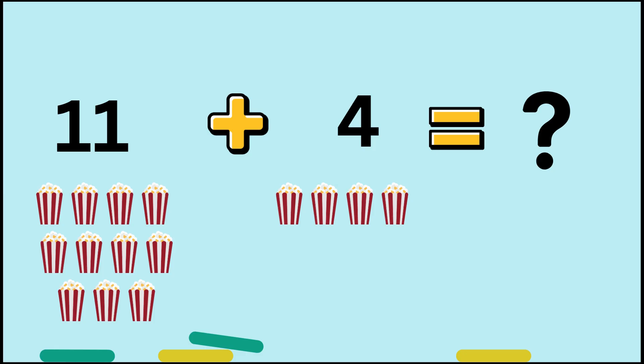Next one. 11 and 4. Now, I'm going to let you guys do this one on your own, okay? Good luck. If you guys said 15, boom, you got it. So, 11 is the bigger number. Then you add 12, 13, 14, 15. So, 11 plus 4 equals 15.